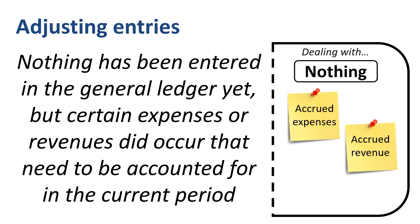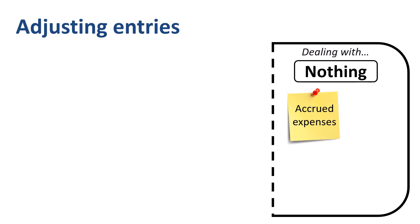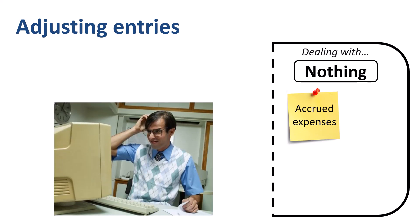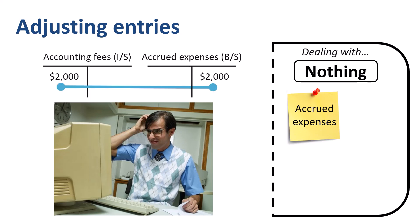Are there any expenses we incurred for which we have not paid yet and for which we have not received an invoice yet? An example is accounting fees. The activities of the external accountant are taking place after the calendar year is finished, but certainly relate to the current period. We are certain to receive an invoice in the future for expenses incurred in the current period, so we have to set some money aside. We don't want to understate current period expenses. Debit accounting fees for $2,000, credit accrued expenses for $2,000.